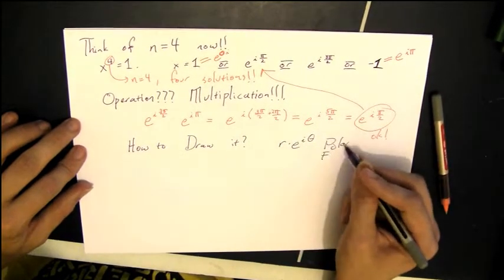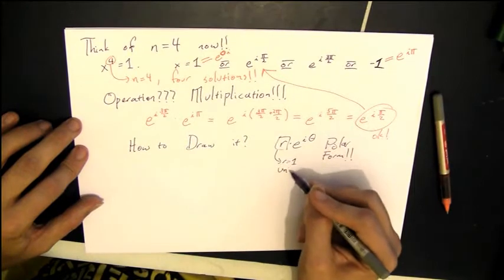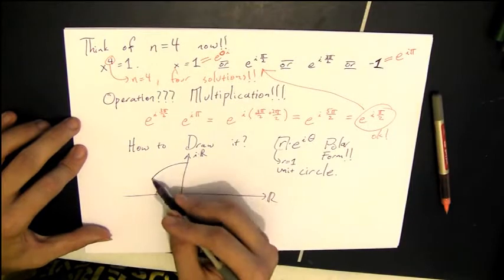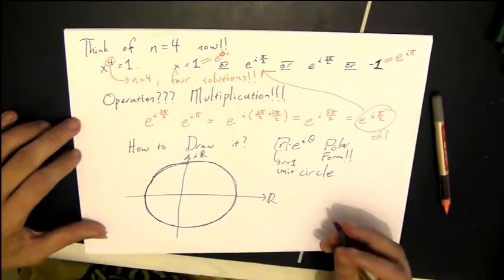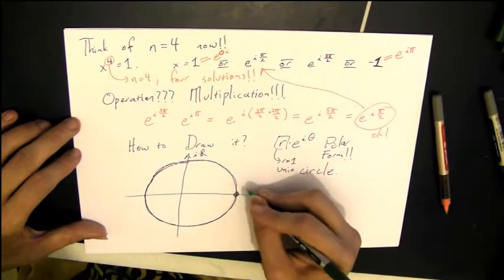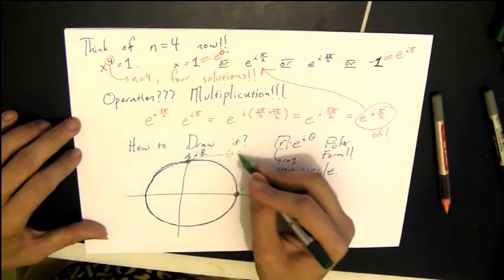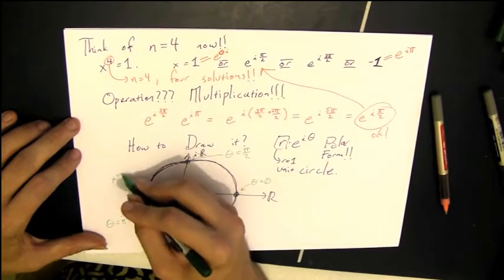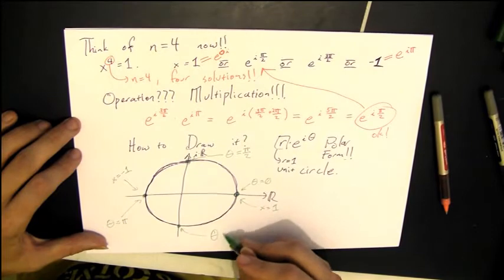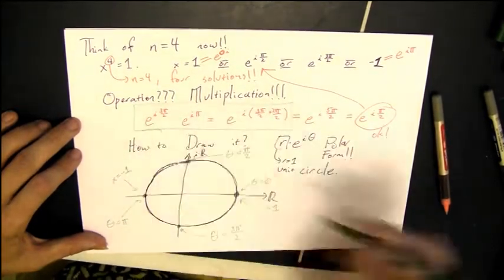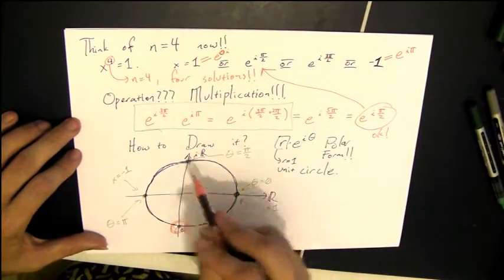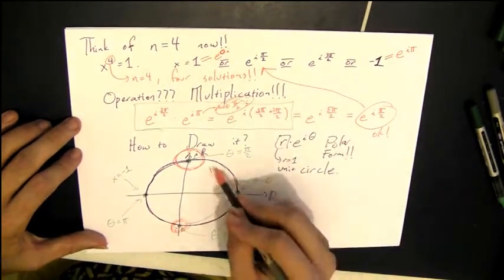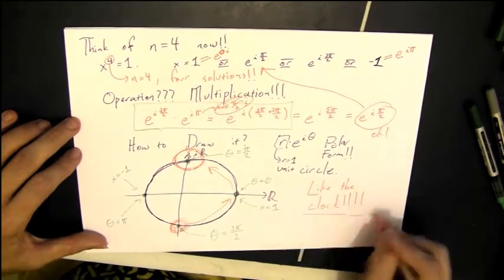Now, we said that this is the polar form of the complex numbers, so we should be able to draw it pretty nicely. And in fact, that r equals 1 means that we're going to be somewhere on the unit circle. So we can draw theta equals 0, theta equals pi over 2, theta equals pi, and finally, our theta equals 3 pi over 2. And that gives us a nice picture of our four things. And when you multiply two of them together, you really see that you just add the angles. And really that picture is behaving sort of like the clock, except it's running kind of counterclockwise instead of clockwise.